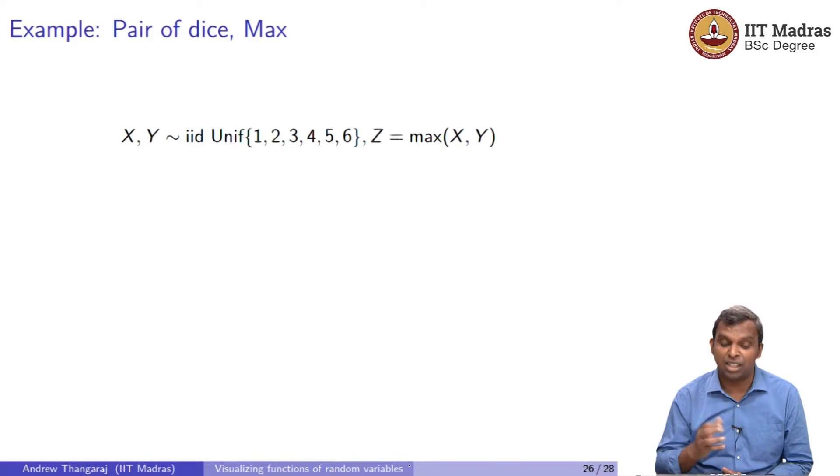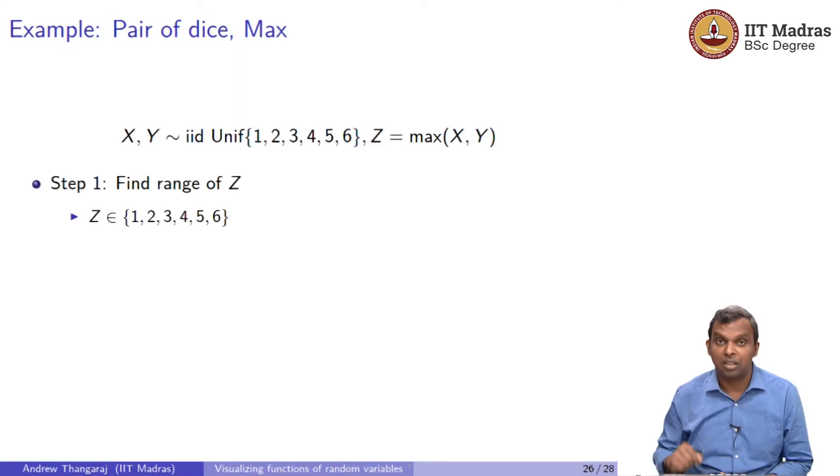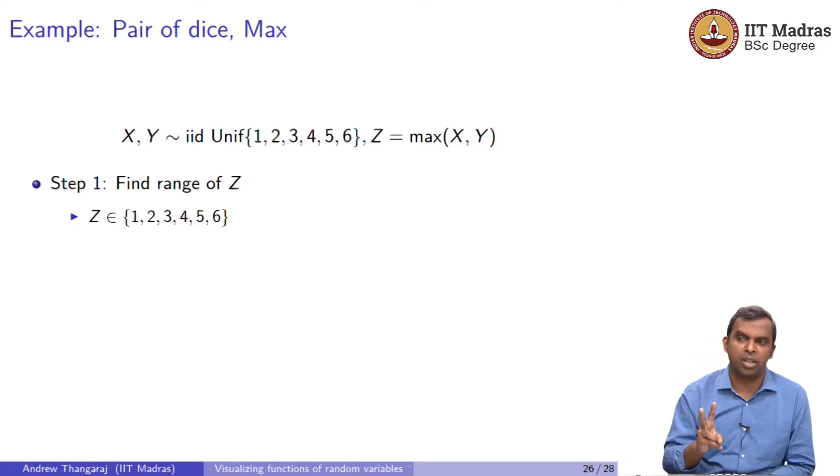In this problem we're going to look at the max function. Once again I have thrown a pair of dice and I will get IID uniform 1 to 6 as the distribution. I'm going to look at max of X comma Y. Again you follow these two steps. Whenever you do functions of random variables you always do two steps.